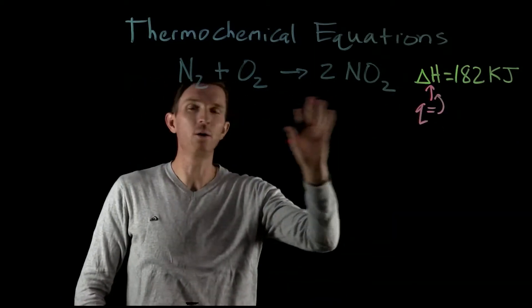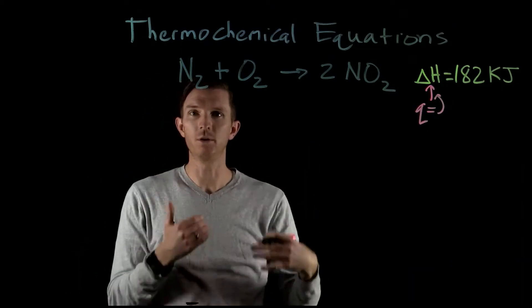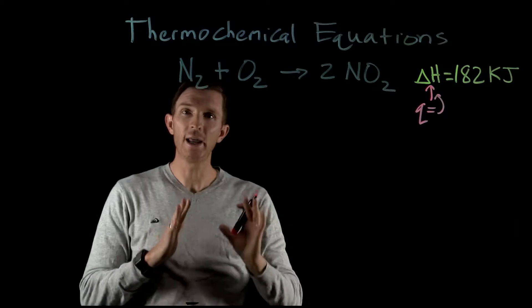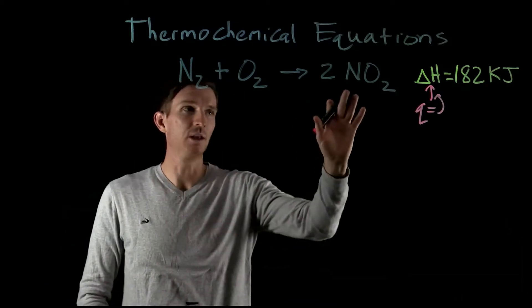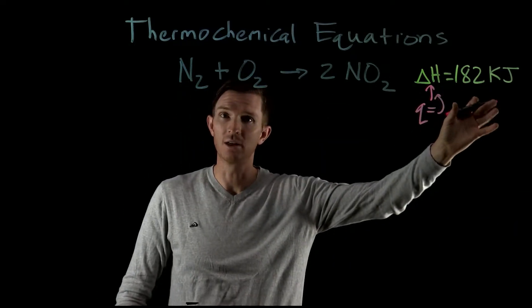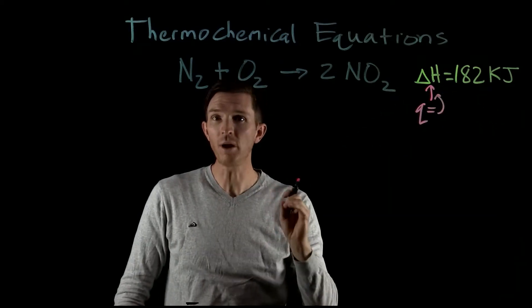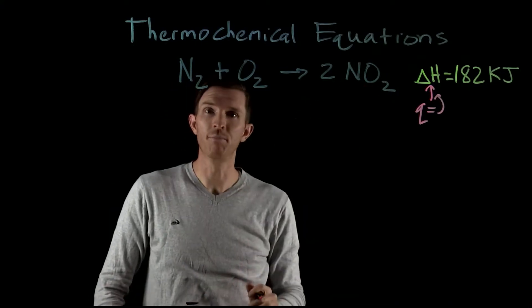Now why do we use this and how do we use this? So there's a few ways that we want to make sure we can observe some information from this. Number one, we can look and see there's a relationship now between the amount of reactants and amount of products to the amount of heat absorbed or released, in this case absorbed. So 182 kilojoules corresponds to one mole of N2, one mole of O2, or two moles of NO2.